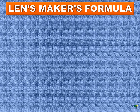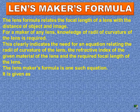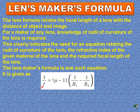All lenses are made up of transparent materials, and any optically transparent material will have a refractive index. The lens formula relates the focal length of the lens with the distance of the object and the image. For a maker of any lens, optical stores develop lenses for the needs of customers, and knowledge of the radius of curvature of the lens is required. This indicates the need for an equation relating the radius of curvature, the refractive index of the lens material, and the focal length. The lens maker's formula is given as: 1/F = (μ - 1)(1/R1 - 1/R2).